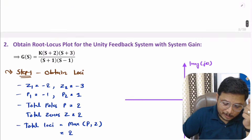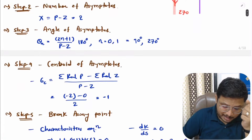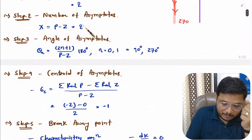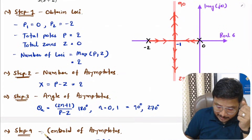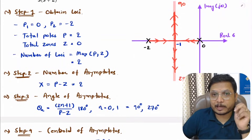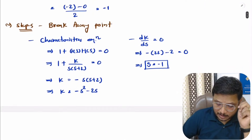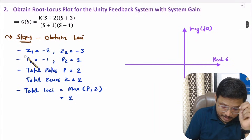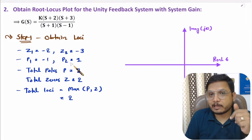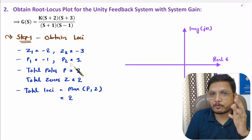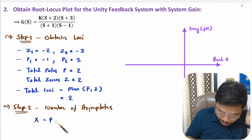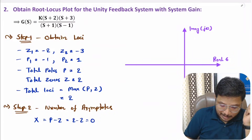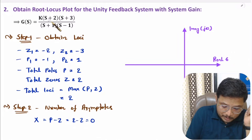We don't need to calculate asymptote-related steps here, unlike the last video where we calculated number of asymptotes, angle of asymptotes, and centroid of asymptotes. The reason is that we have two poles and two zeros, so lines emerge from the poles and enclose to the zeros. Number of asymptotes equals total poles minus total zeros, which is 2 minus 2 equals 0.